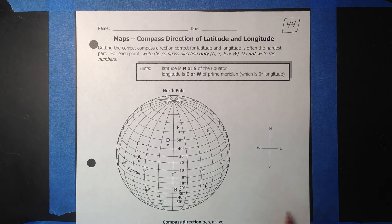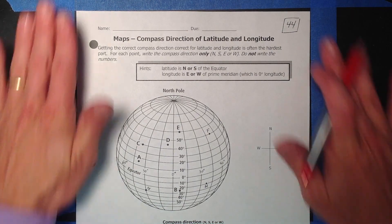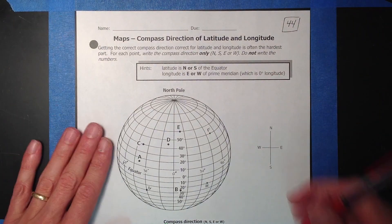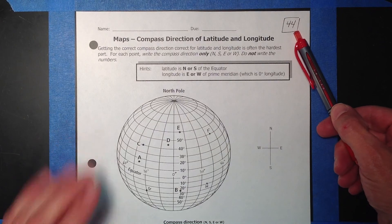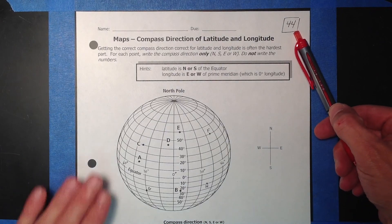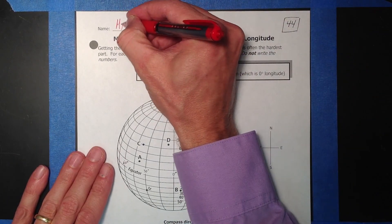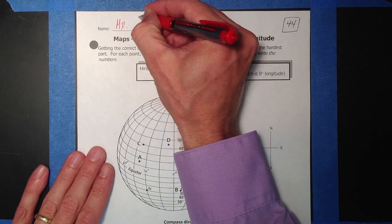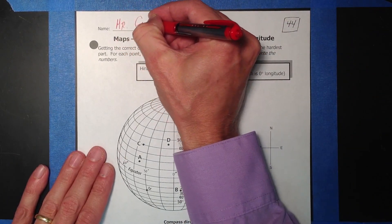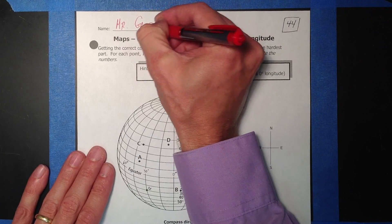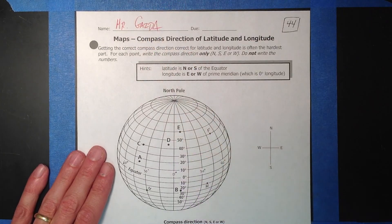Hello, Mr. Gasta here. Welcome to Gastonia Production Studios. This is Homework 44. This is to help you with Homework 44. People often have trouble with this. So, here we go.